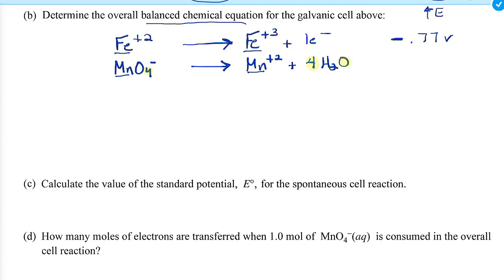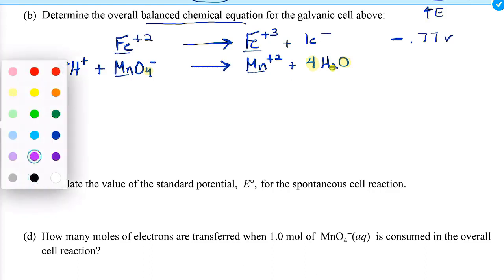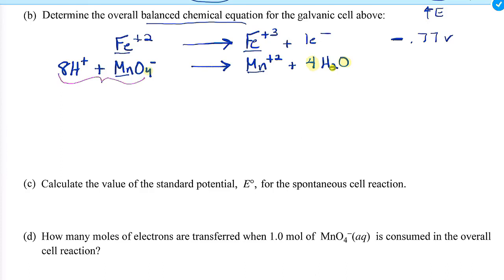Now balance the hydrogens. I've got four waters times two hydrogens each, giving eight H's on the product side and none on the reactant side. So I balance with eight protons — this is happening in an acidic environment. Now I have to balance the charge with electrons. The overall charge on the reactant side is +7 (eight protons minus the -1 from MnO4⁻). Water is neutral, so the product side has +2 from Mn²⁺. I need to add five electrons to the reactant side to make both sides +2.